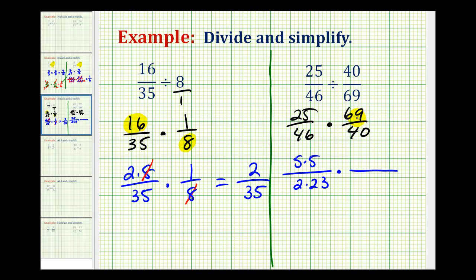Now 69 is divisible by 3 since the sum of the digits is divisible by 3, meaning 6 plus 9 is equal to 15. And since 15 is divisible by 3, so is 69. So 69 divided by 3 is equal to 23, so the prime factorization of 69 is 3 times 23.